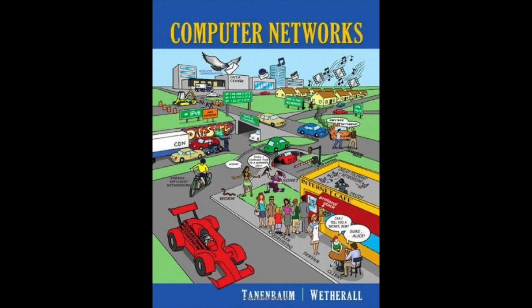Data can now be exchanged using SEND and RECEIVE primitives. All data packets sent will also be acknowledged, eventually. The acknowledgements are managed by the transport entities using the network layer protocol and are not visible to the transport users. Similarly, the transport entities handle timers and retransmissions invisibly. To the transport users, a connection is a reliable bit pipe—one user stuffs bits in and they magically appear in the same order at the other end. This ability to hide complexity is the reason that layered protocols are such a powerful tool.